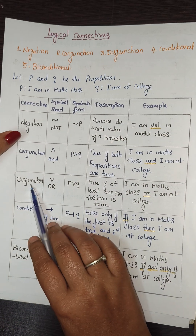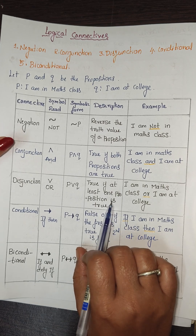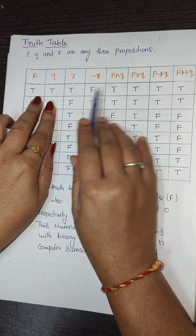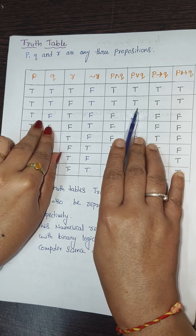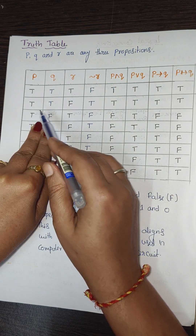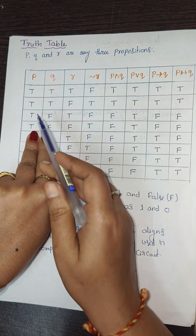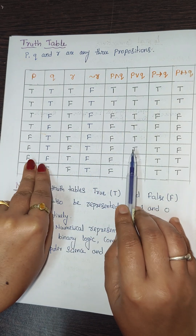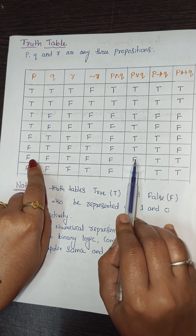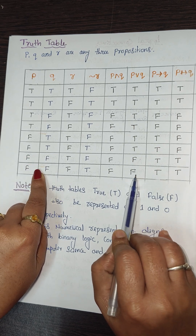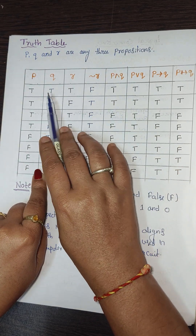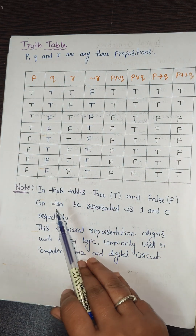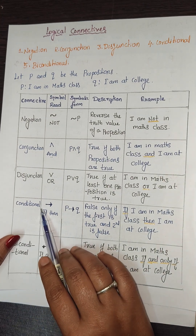For disjunction (p ∨ q), it is true if at least one proposition is true. Both T gives T; if either p or q is T it is T; only when both p and q are F is the result F.